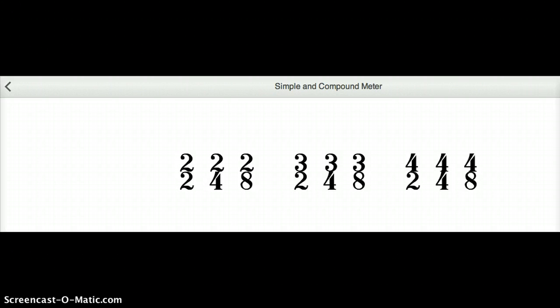So as you can see, a simple meter will always have a 2, 3, or 4 as the top number of the time signature.